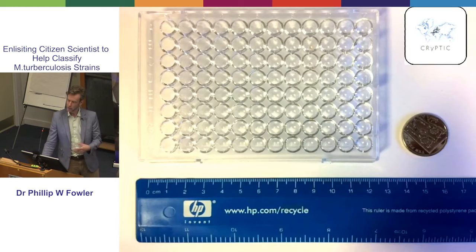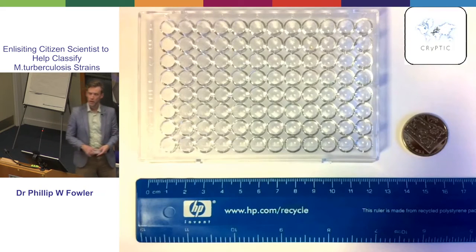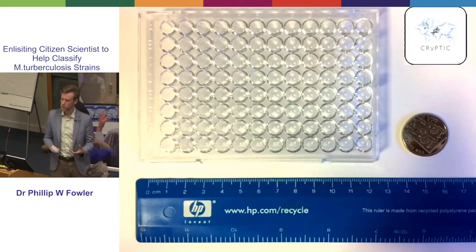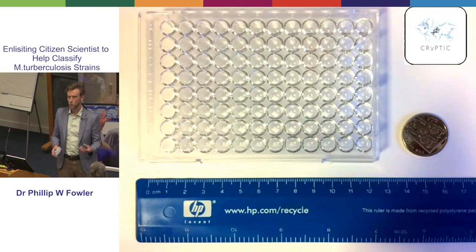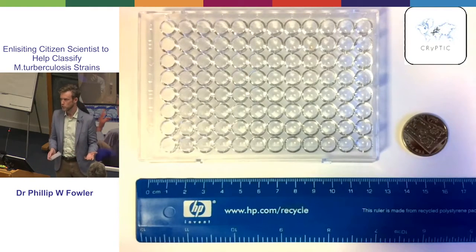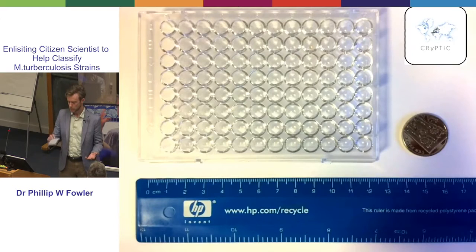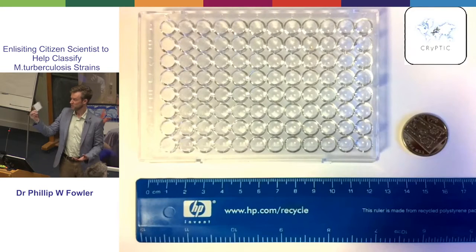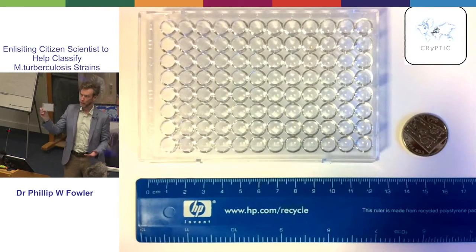I need to just backpedal a bit before we get the phones out. Tim talked about how we're going to characterise those strains and try and work out which drugs are effective on them and which aren't. And the way we're doing that is, rather than using those tubes that we had pictures of — because we'd need too many tubes — is to use one of these. This is a fairly straightforward scientific bit of kit.